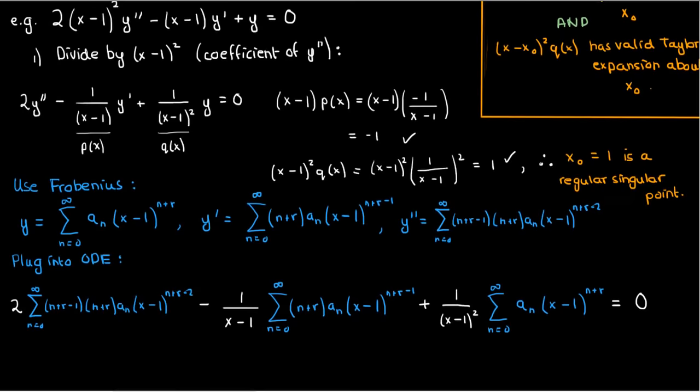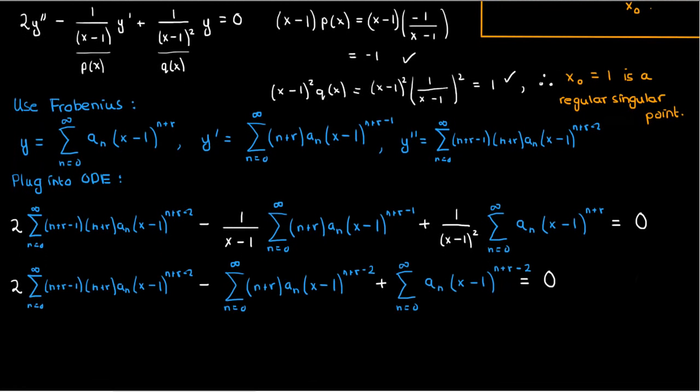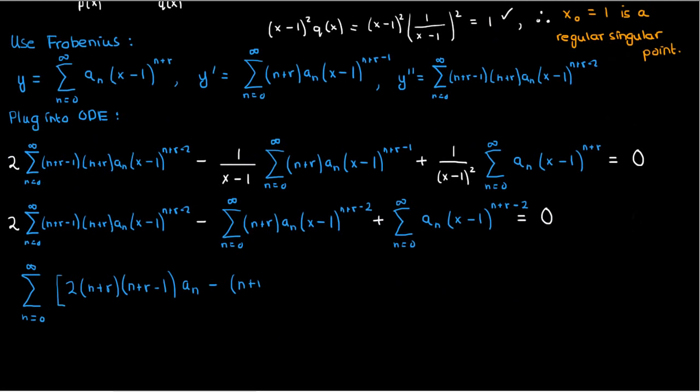For the y' term, or the second term in this equation, sticking the (x-1) into the sum will just reduce the power of the (x-1) inside the sum by 1. Similarly, sticking the (x-1)² into the third term will reduce the power by 2, and this is what we end up with. Now, this is really convenient. All the powers on the (x-1) term in the summations are the same, and all the summations start from n = 0. That means we can immediately combine everything without carrying out any intermediate steps like we did last time.